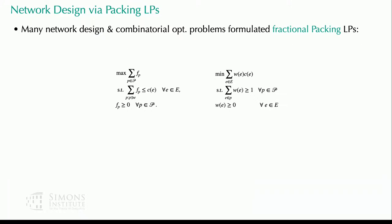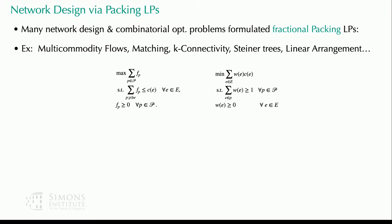Many network design problems can be formulated as fractional packing linear programs, albeit of exponential size. Notable examples are multi-commodity flows, matching problems, standard cut problems, subgraph connectivity, linear arrangements — essentially any problem which asks to find a subgraph satisfying a certain property. If you try to write the explicit linear-size LP using the graphical formulation, they will not be positive LPs. You really need the implicit LP formulation to get a positive LP.